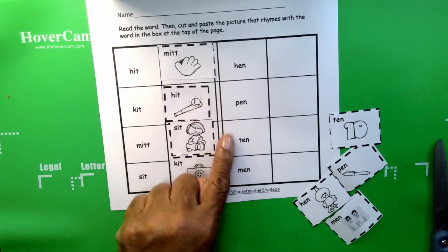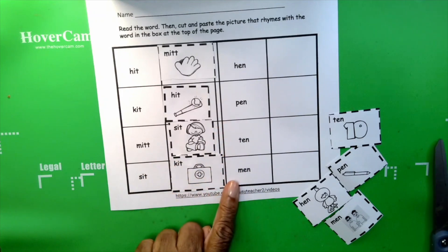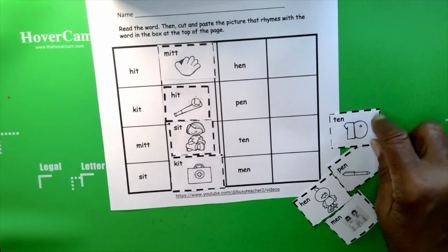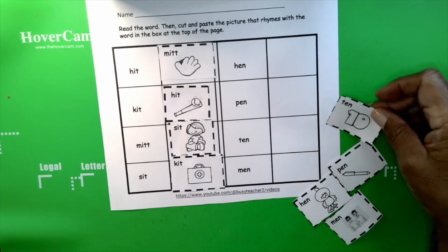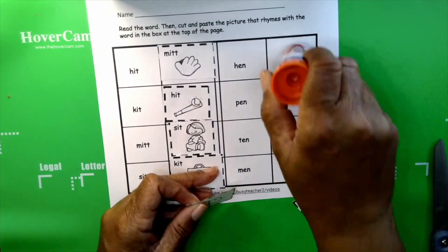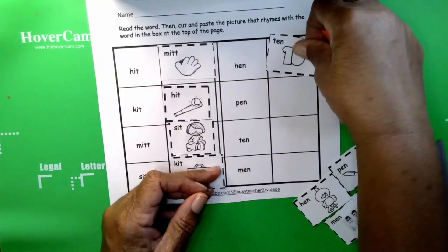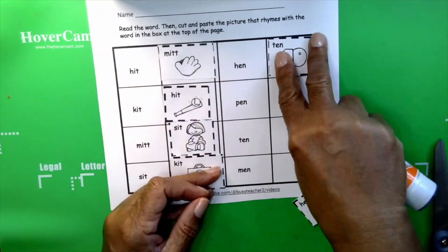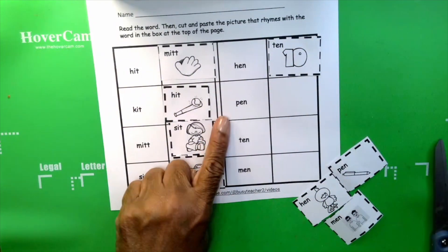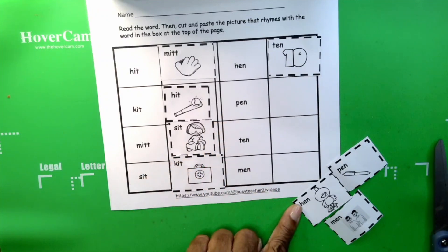Hen, pen, ten, men. Can you find a picture that rhymes with hen? Yes, here it is. Ten. Pen, ten. Pen, pen, pen.